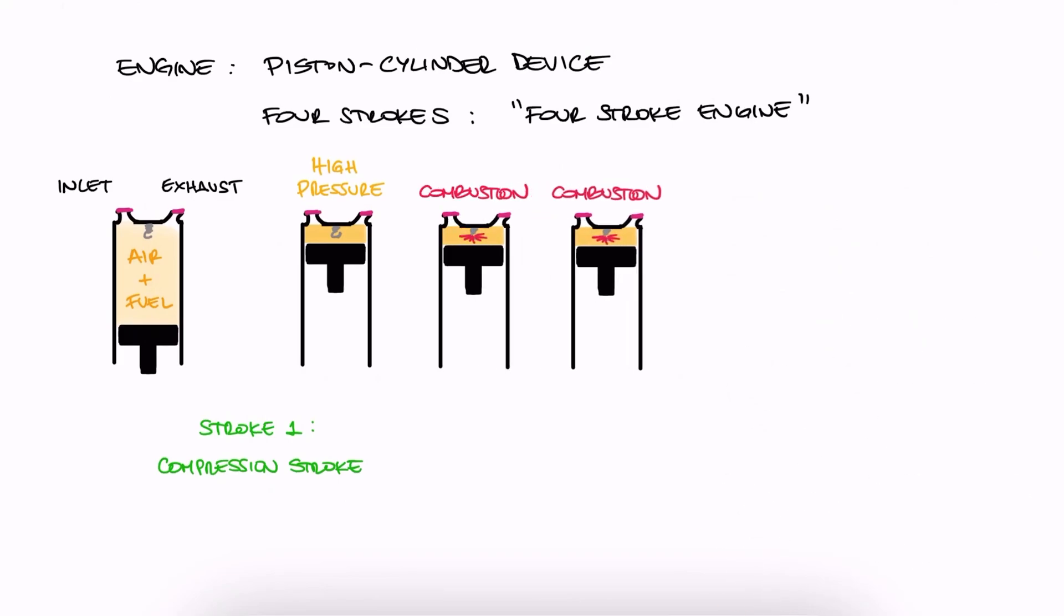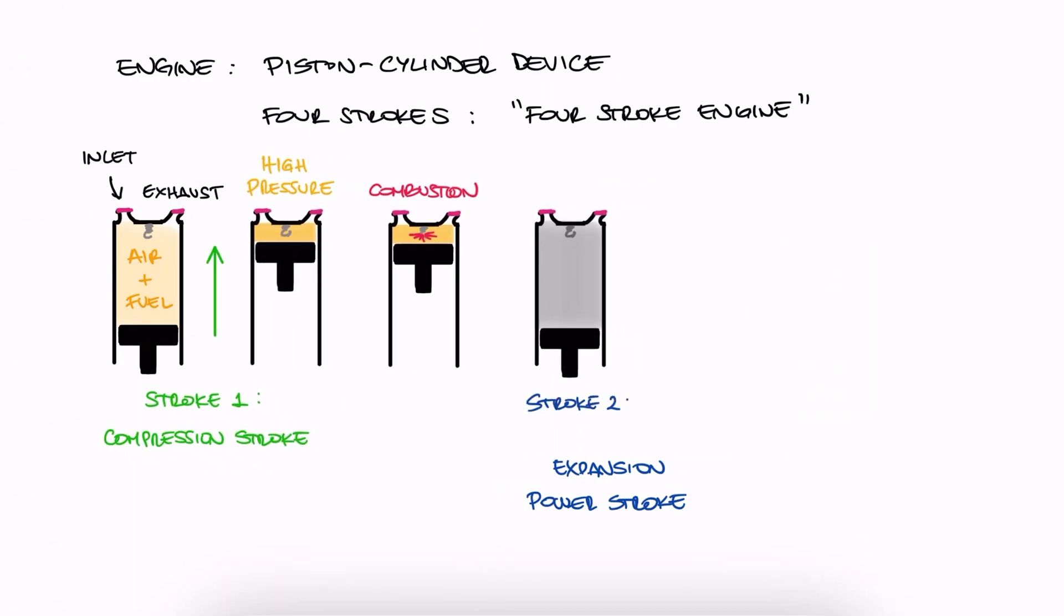As a consequence, the piston is pushed downward. This is called the expansion or power stroke, which is the second stroke.